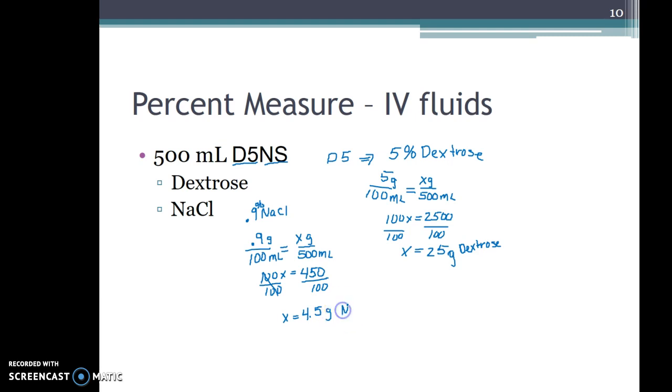Looking at all the details, we found that this IV has 25 grams of dextrose (the sugar) and 4.5 grams of salt from the normal saline. The remaining component is 500 mL of water, which is what the other two ingredients are dissolved in.